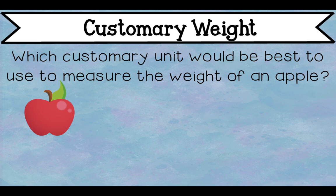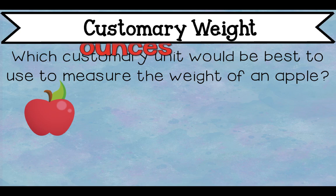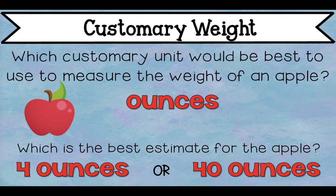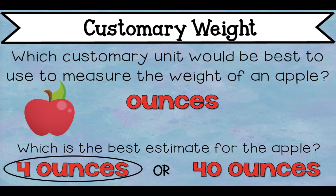Now we're going to talk about which unit would be most appropriate for a given situation. Would we use ounces, pounds, or tons? Which customary unit would be best to measure the weight of an apple? We wouldn't use tons for something like a car, and pounds like a package of butter seems too heavy. An apple is best measured in ounces. Which is the best estimate — about four ounces or 40 ounces? Well, if one slice of bread is one ounce, the apple would weigh about four ounces — about four slices of bread — because apples are pretty juicy but not very heavy.